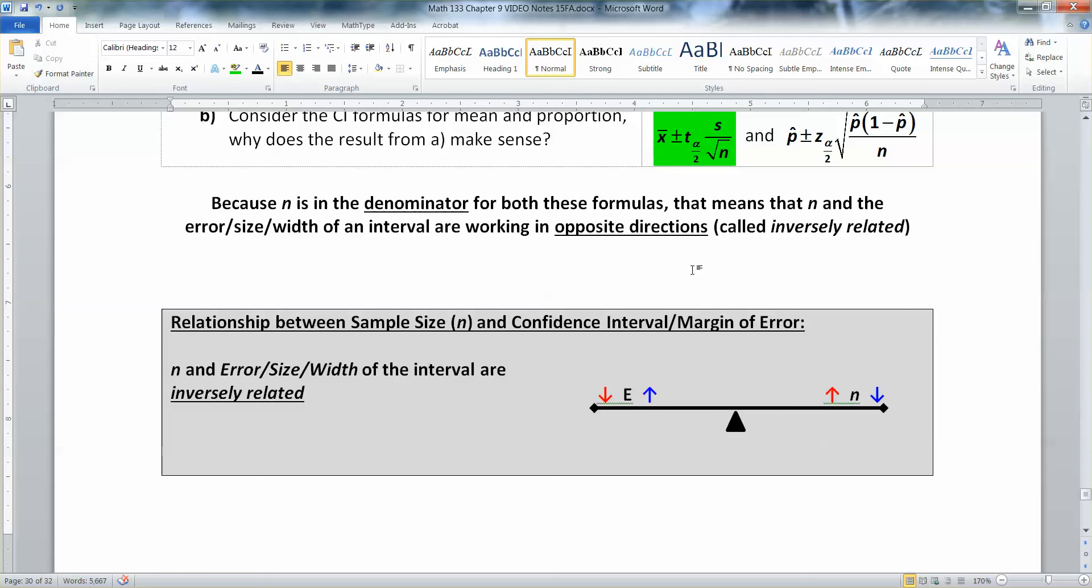As n goes down, error goes up. And where error goes, the size and the width of the interval go too because all the error is is twice or half the width of the interval. So let's do our error. Thank you.